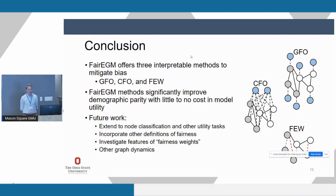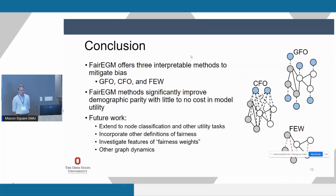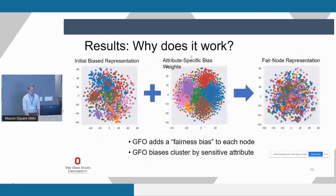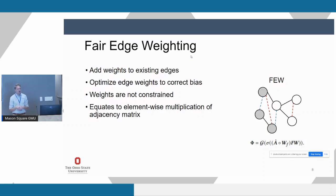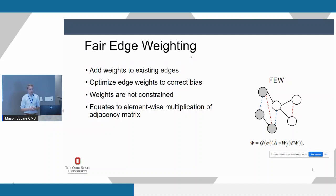Q: Thanks for the presentation. A clarification: does the fair edge weighting method change neighborhoods? You mentioned the virtual node method does not. A: Yes, it absolutely can — weights can be zero or even negative. We are only changing existing edges; where there is no edge we are not adding one. So it can restrict your neighborhood but cannot expand it.